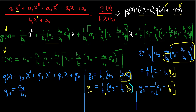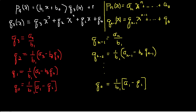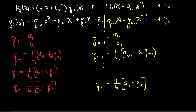Let me pull this back together. We have p₄(x) = (b₁x + b₀)·q(x) + remainder. I want to find q₃, q₂, q₁, and q₀ using this relationship: q₃ = a₄/b₁; q₂ = (1/b₁)·(a₃ − b₀·q₃); q₁ = (1/b₁)·(a₂ − b₀·q₂); q₀ = (1/b₁)·(a₁ − b₀·q₁). This pattern is very amenable to writing a computer program.